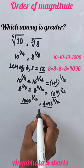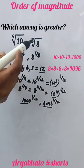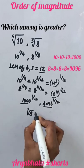4096 is the greatest number, so cube root of 8 is the greatest number.